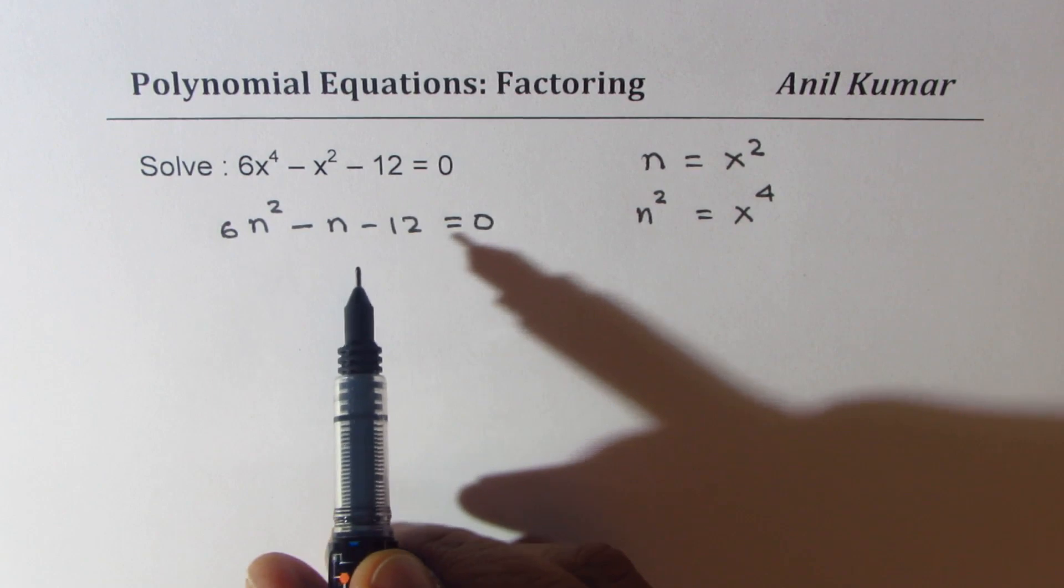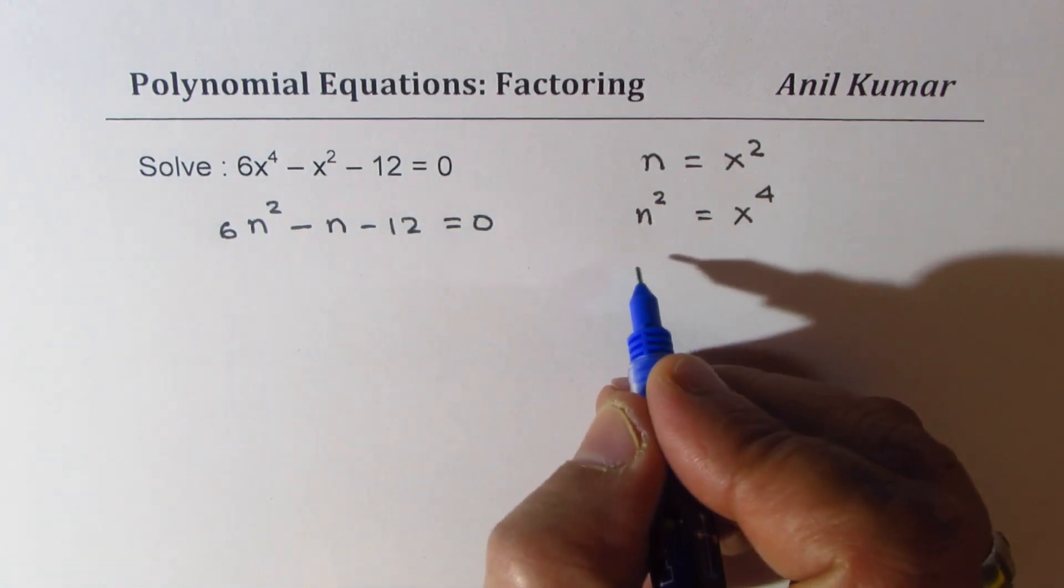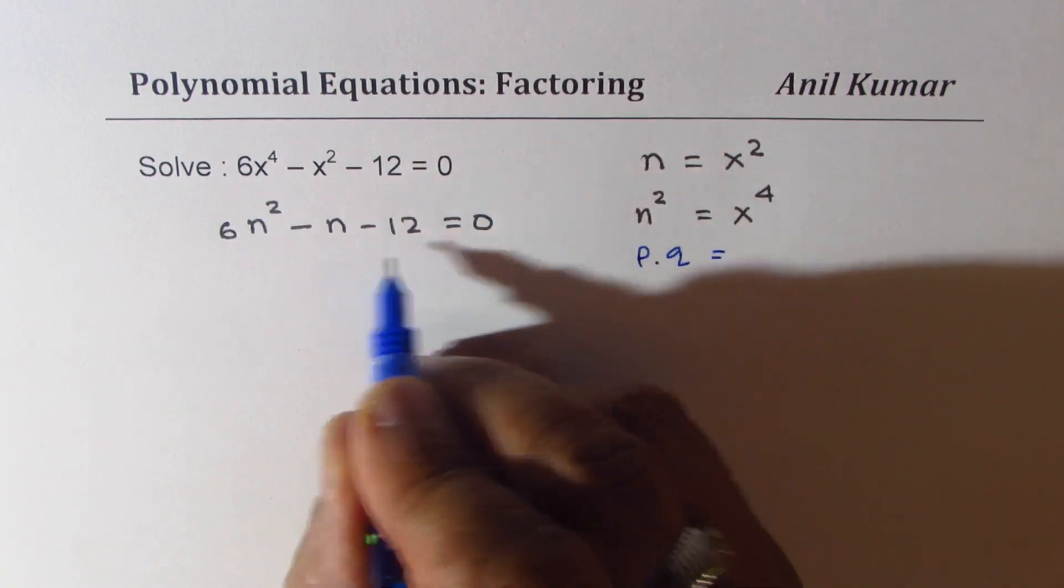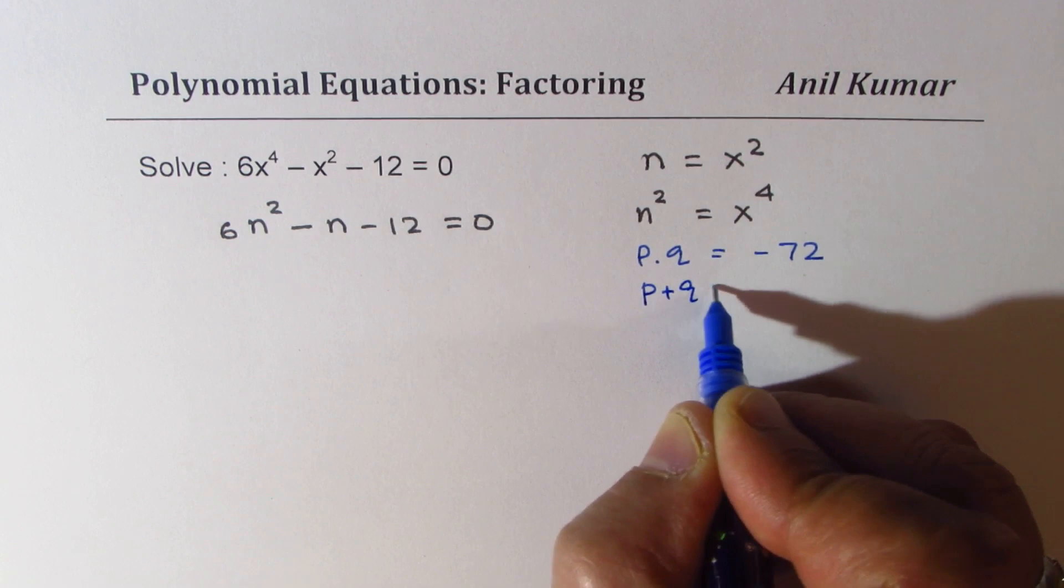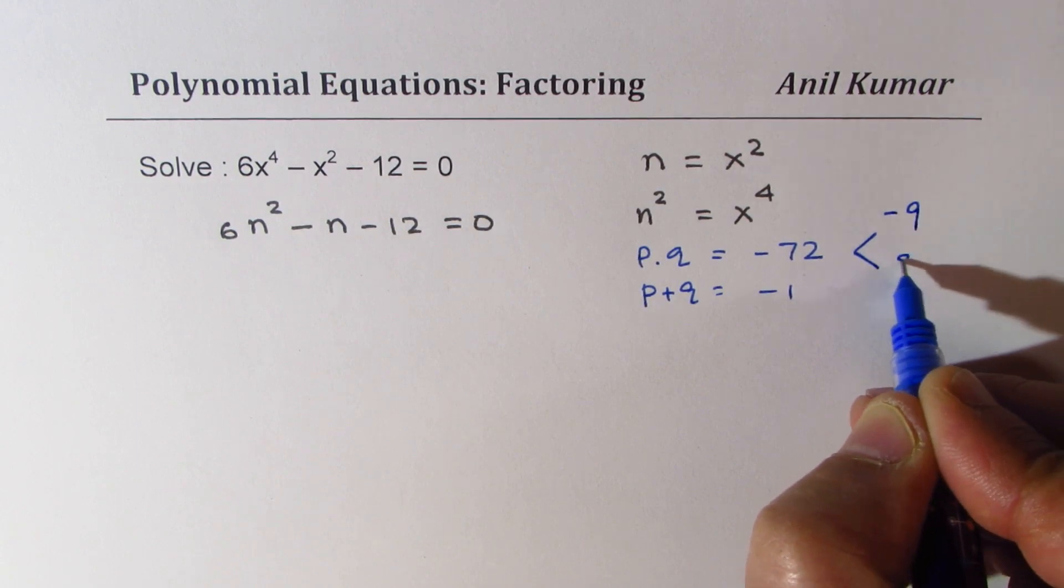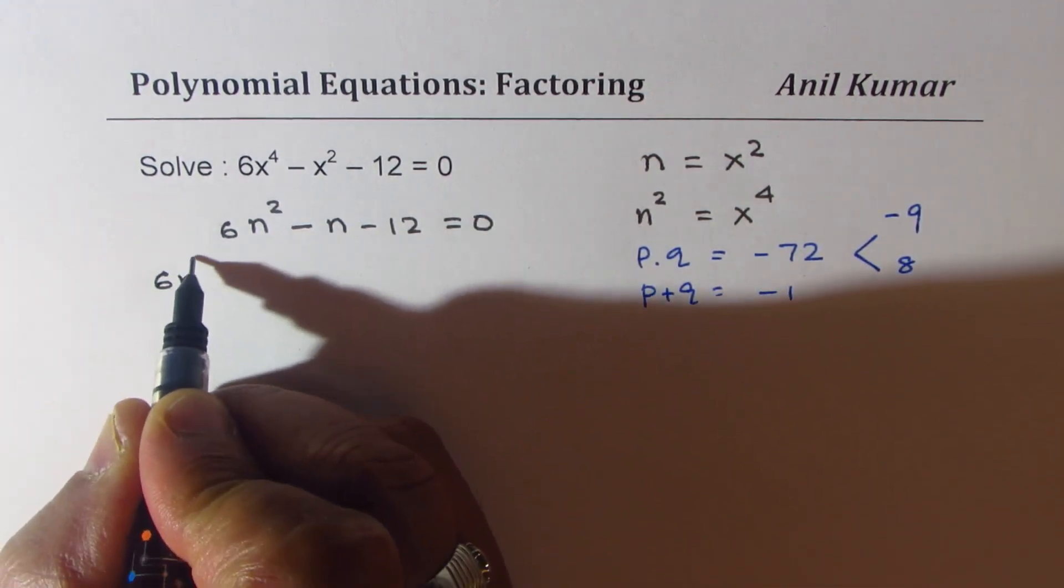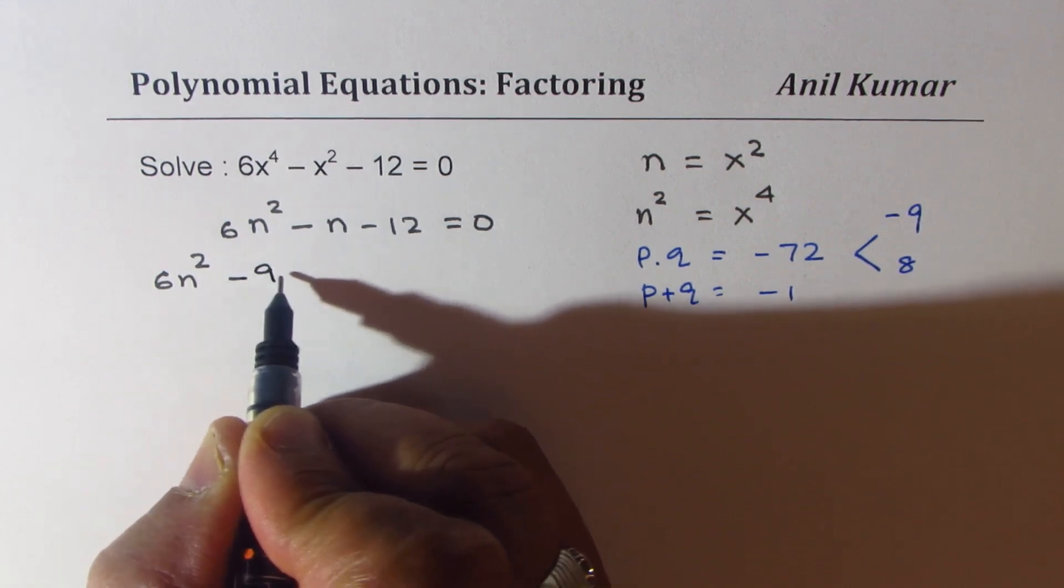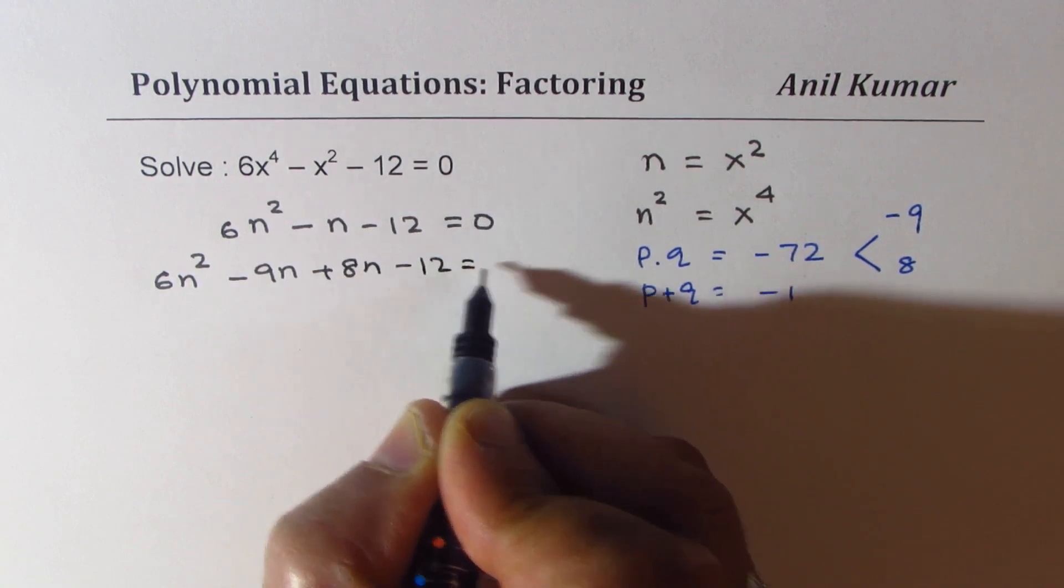Let's factor this. We're looking for product of 72. We are looking for product of two numbers p times q as minus 72 and sum of the two numbers is minus 1. That could be 8 times 9, so minus 9 and 8 will be the numbers which can help us. Let's write down this equation as 6n squared. Instead of minus n, I'll write minus 9n plus 8n minus 12 equal to 0.